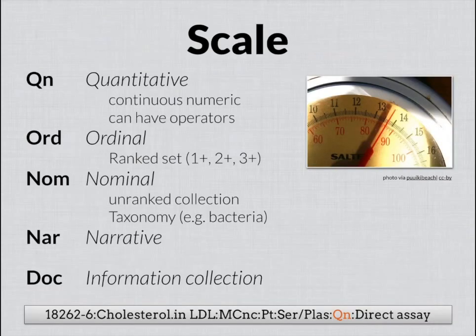The scale is the next attribute, and this is where LOINC distinguishes between observations of different types — quantitative versus categorical result values. The scale could be QN for quantitative, which in LOINC's view is a continuous numeric, including things with operators like greater than or less than. That's distinguished from ordinal — a set of responses that can be ranked, such as 1+, 2+, 3+, mild/moderate/severe, positive/negative, reactive/non-reactive. All those things have an order to them and are flagged as ordinal in the database.